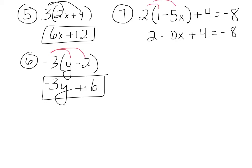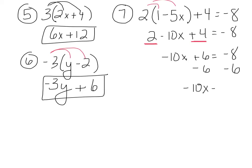Now combine like terms: we have 2 and plus 4 as like terms. Negative 10x comes down, and 2 plus 4 gives us 6. So we have negative 10x plus 6 equals negative 8. Get rid of addition and subtraction first: subtract 6 from both sides. That gives us negative 10x equals negative 14.